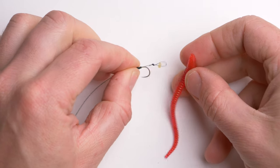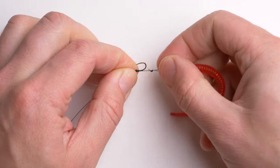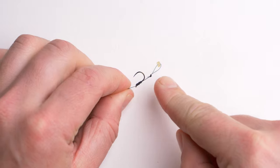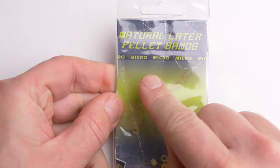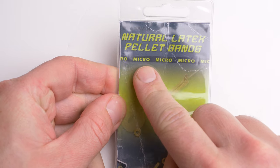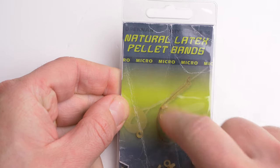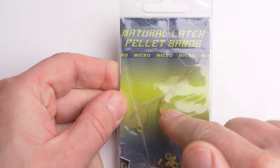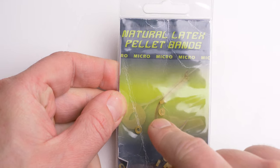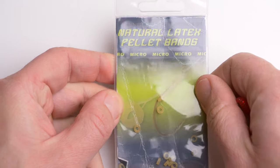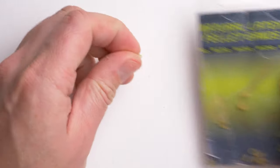By far the easiest way to hair rig a worm is just to use a hair rig with a band on it. Those are very, very small and they must be very small. In this case, I have Drennan micro pellet bands. This rig will work only if those pellet bands are very small. Otherwise, the worm will be able to wriggle out of the pellet band.